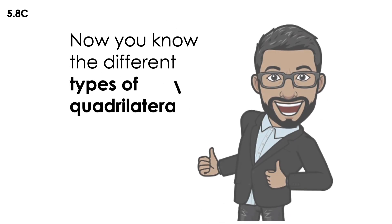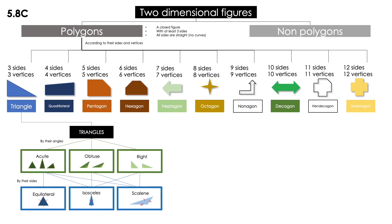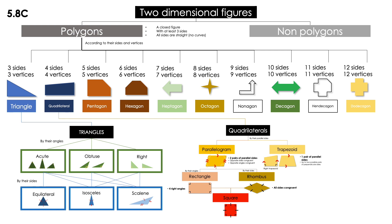Now, you know the different types of quadrilaterals. If we're talking about the same diagram that we have been using before, remember that we have been talking about two-dimensional figures, polygons, then types of polygons, then triangles, and now we are adding quadrilaterals.